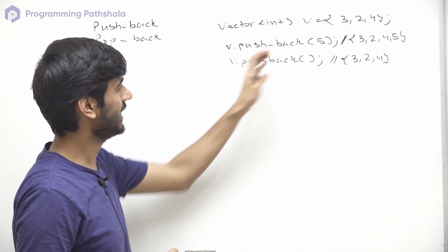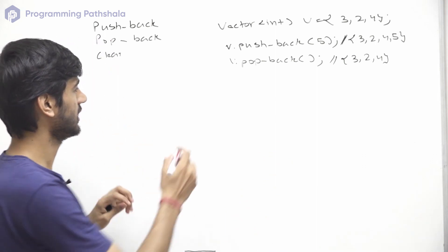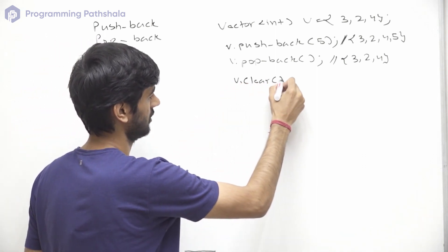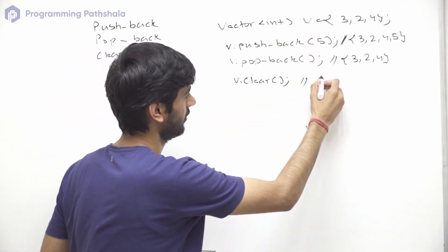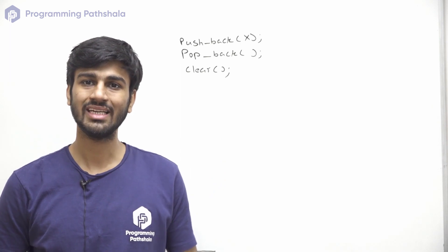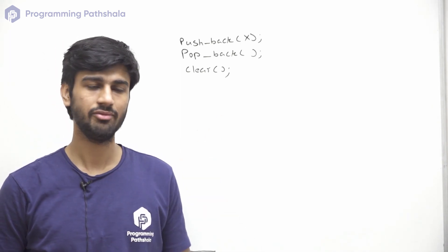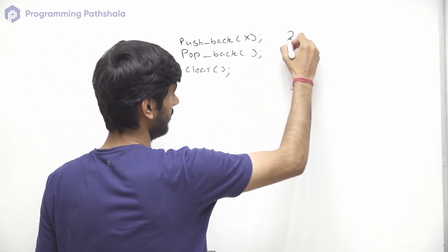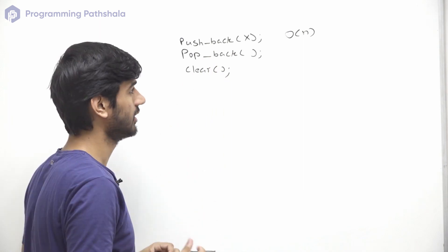Now let's say we want to erase all the data from this vector. In that case we can use clear. So v.clear() will remove all the data and the vector will be empty. Talking about the time complexity of these modifiers, for push back in the worst case it will be linear, or O(n), where n is the size of the vector.